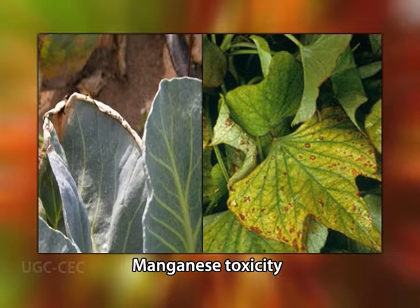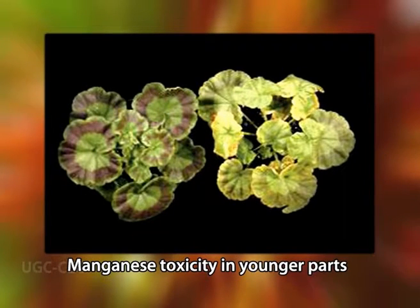Manganese toxicity symptoms appear initially as brown spots or chlorotic or necrotic lesions, which generally spread from tips to the margins and then to the surface of the leaf, and are often accompanied by rolling of the leaf edges. If manganese concentrations are severely toxic, the younger parts of the plant are also affected.